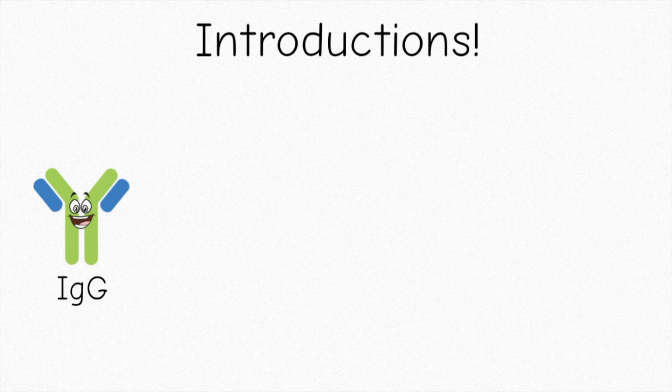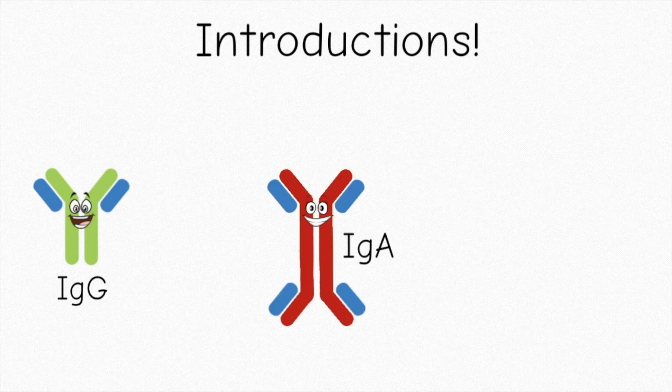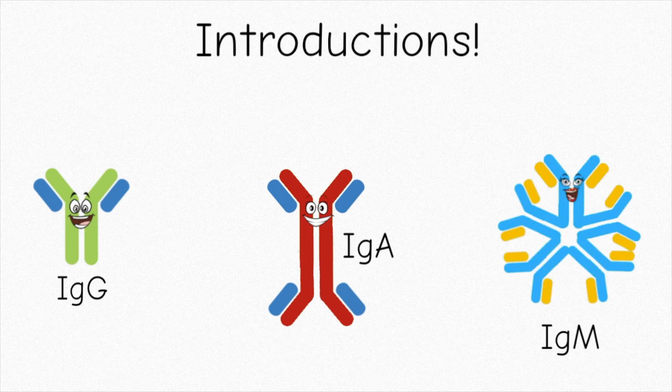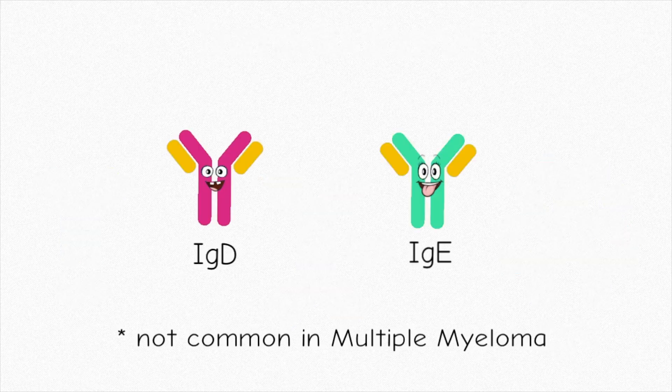I'm IgG, and here are my friends IgA and IgM — the most common types of immunoglobulins you'll find in a multiple myeloma patient. There's also IgD and IgE, but they're not as common.